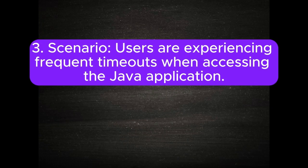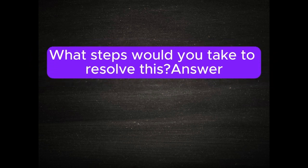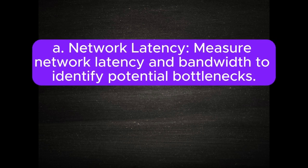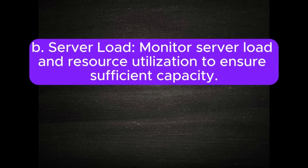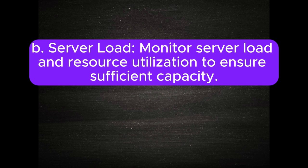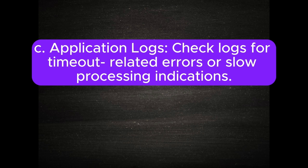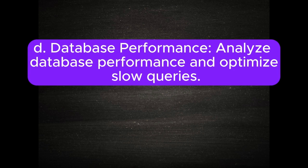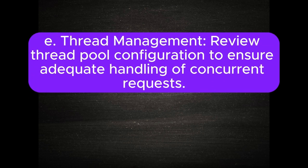Scenario 3: Users are experiencing frequent timeouts when accessing the Java application. What steps would you take to resolve this? Answer: A. Network latency — measure network latency and bandwidth to identify potential bottlenecks. B. Server load — monitor server load and resource utilization to ensure sufficient capacity. C. Application logs — check logs for timeout-related errors or slow processing indications. D. Database performance — analyze database performance and optimize slow queries. E. Thread management — review thread pool configuration to ensure adequate handling of concurrent requests.